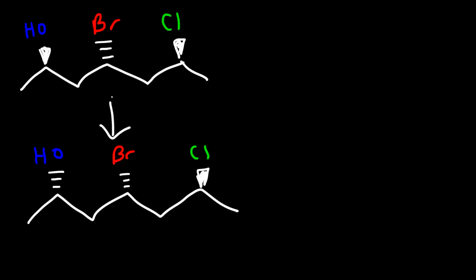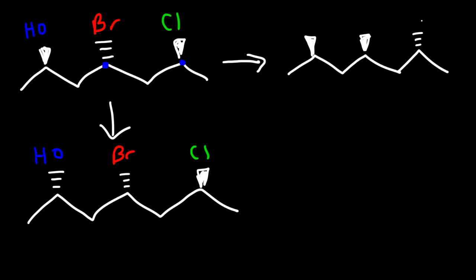But if you have three chiral centers like what we have here, and there's no internal line of symmetry, it's going to be an enantiomer if you change all the chiral centers. Now let's draw one more diastereomer. This time I'm going to change the chiral centers attached to the bromine atom and the chlorine atom. So the OH group is still going to be on the wedge, the bromine group is now on the wedge, and the chlorine group is going to be on the dash. And so this is a diastereomer of the original molecule.